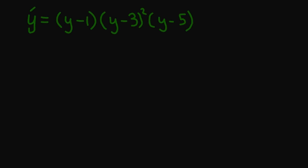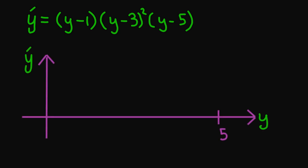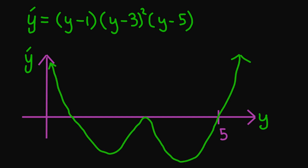In previous videos we approximated solutions to differential equations. This time we're going to create an approximation to the differential equation itself. We will use the same equation: y prime equal to (y minus 1)(y minus 3) squared times (y minus 5). To give some intuition, let's look at the graph again, focusing on the equilibrium point y equal to 5. What we're going to do is create a linear approximation to this function at y equal to 5.